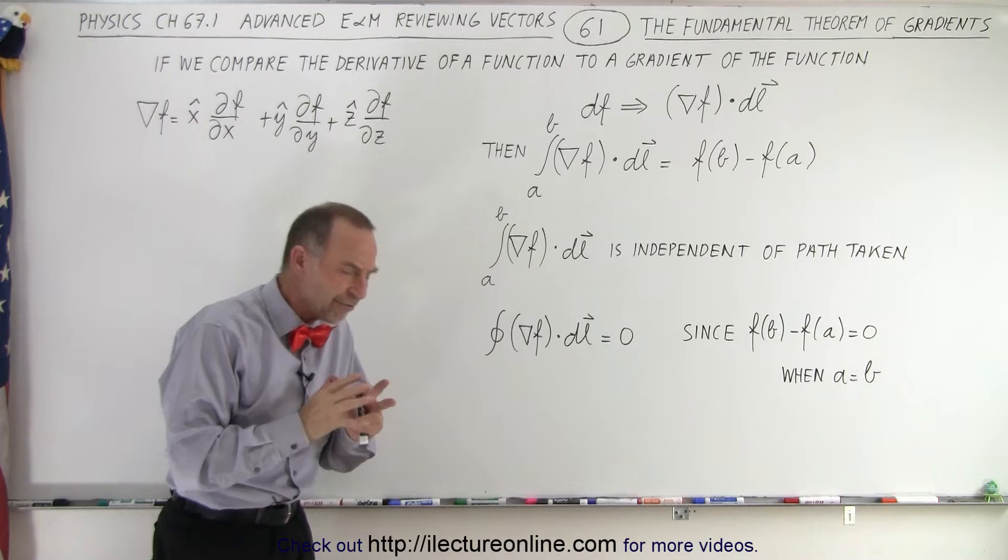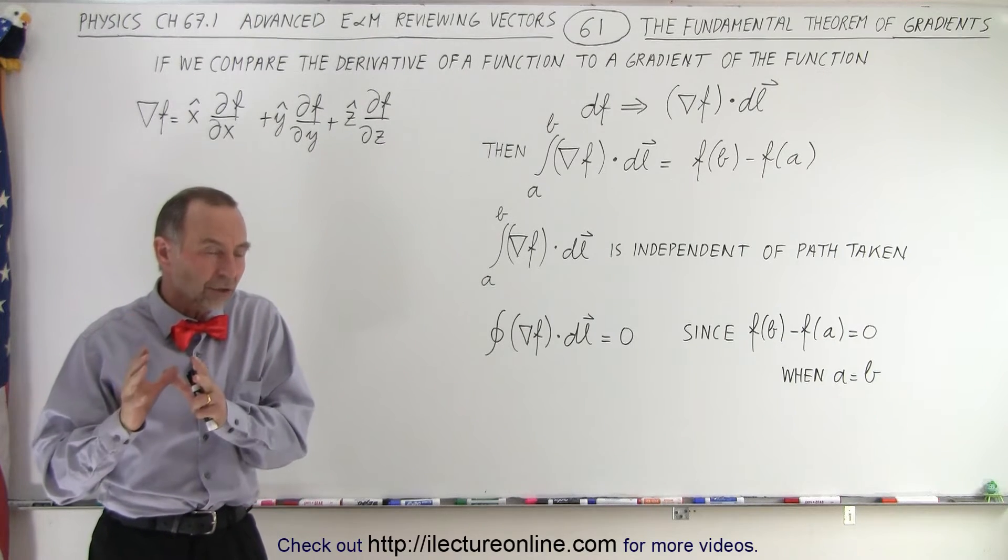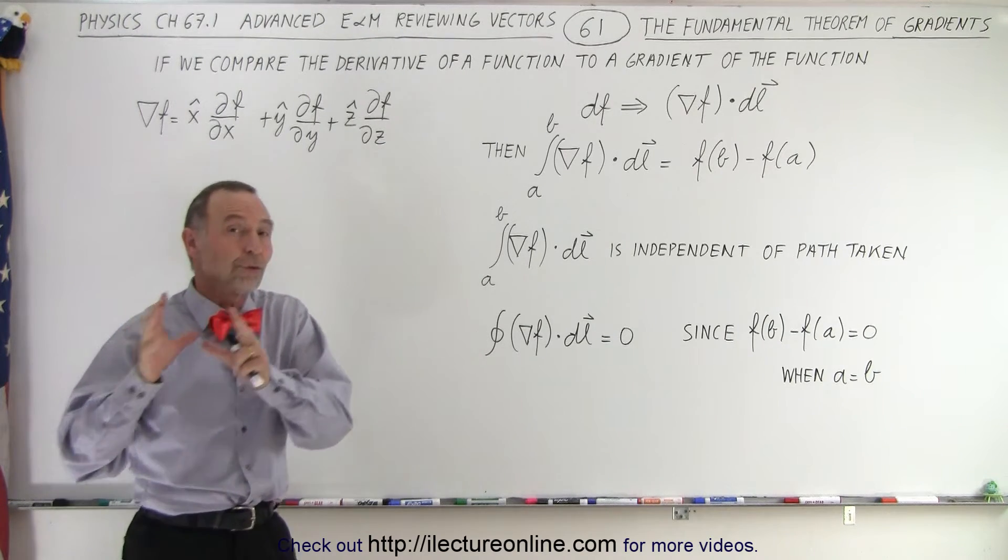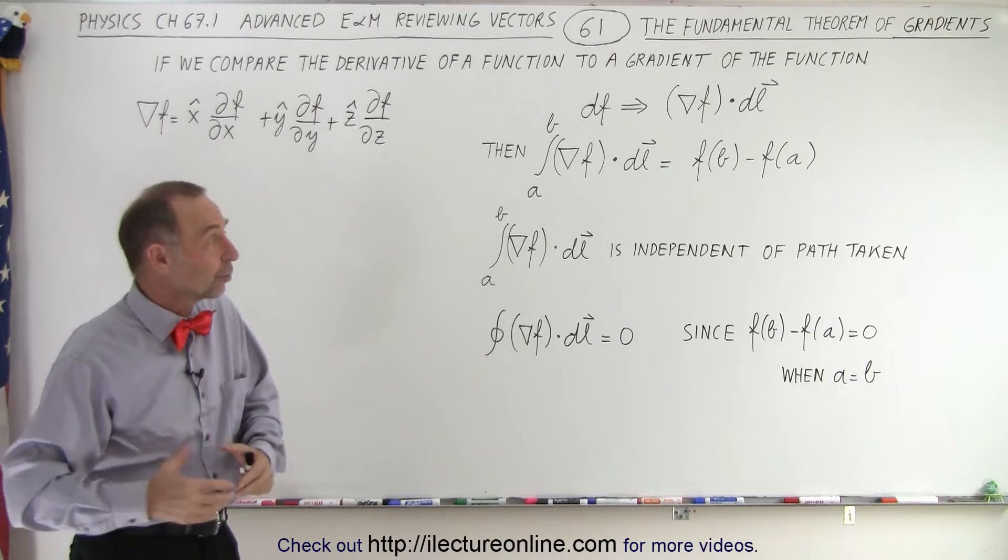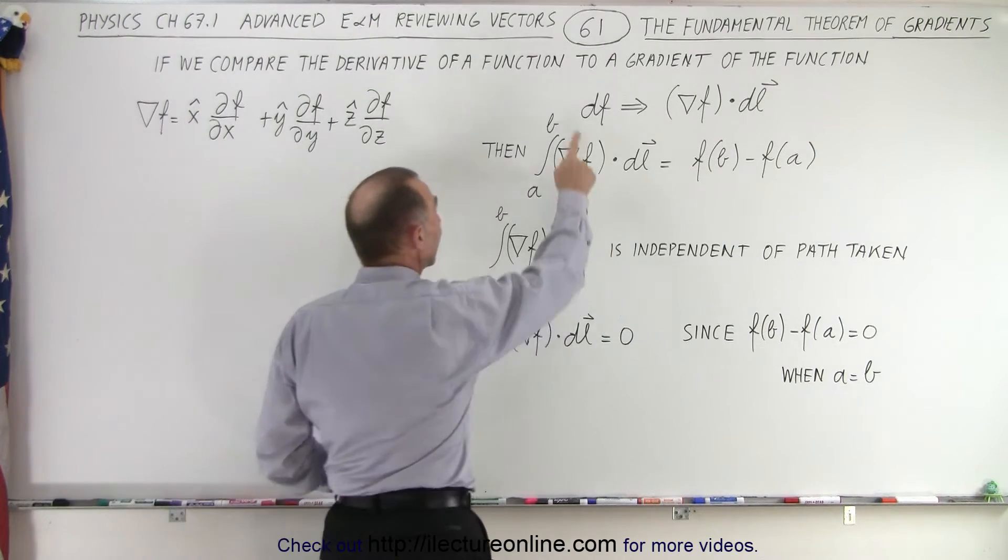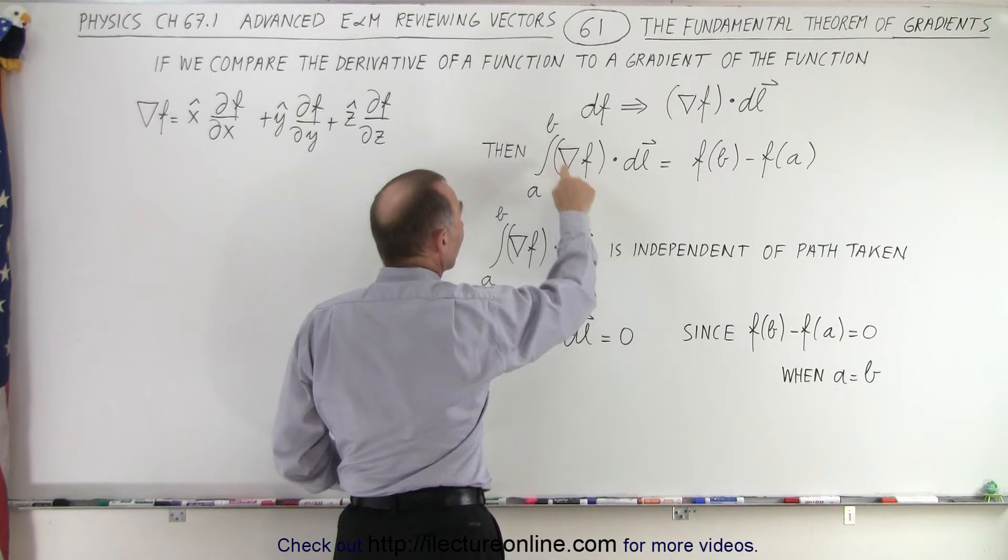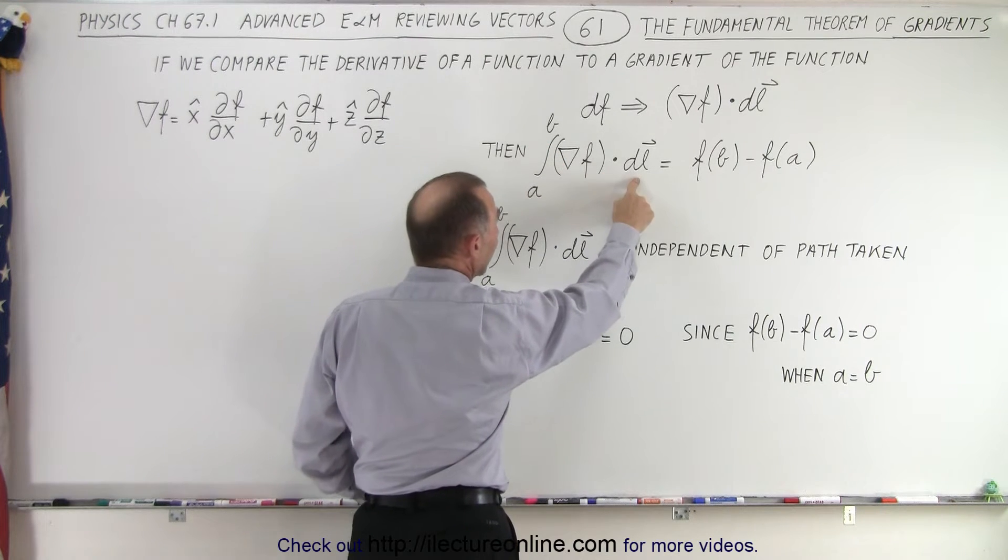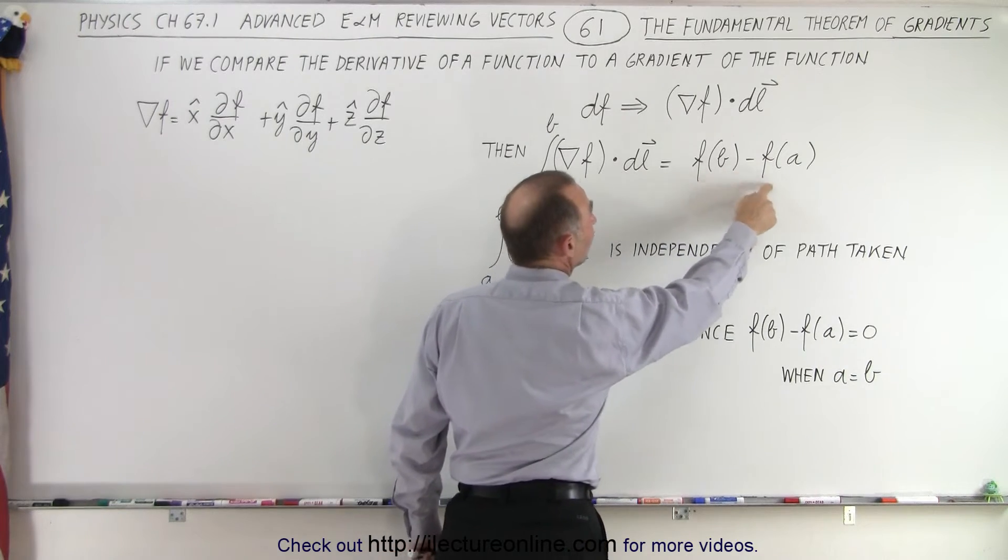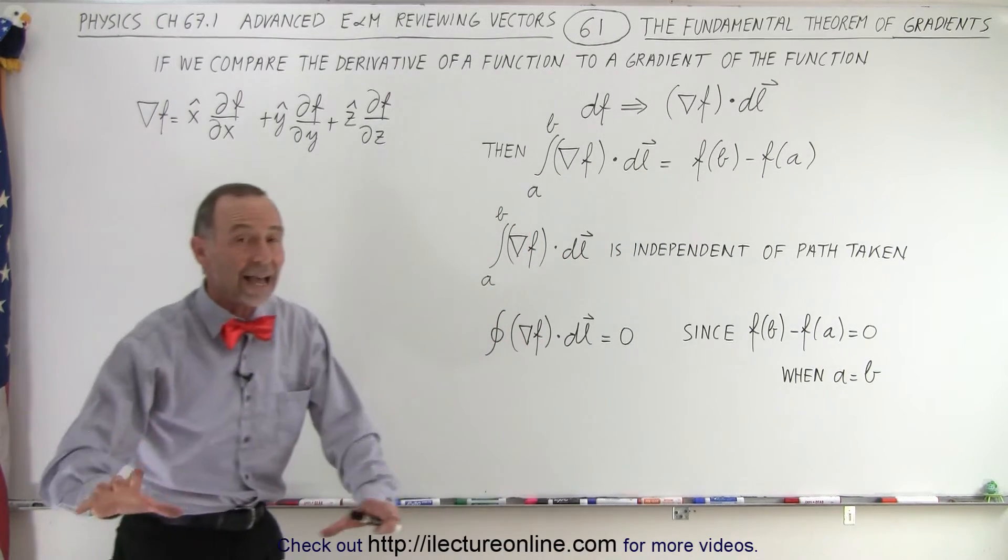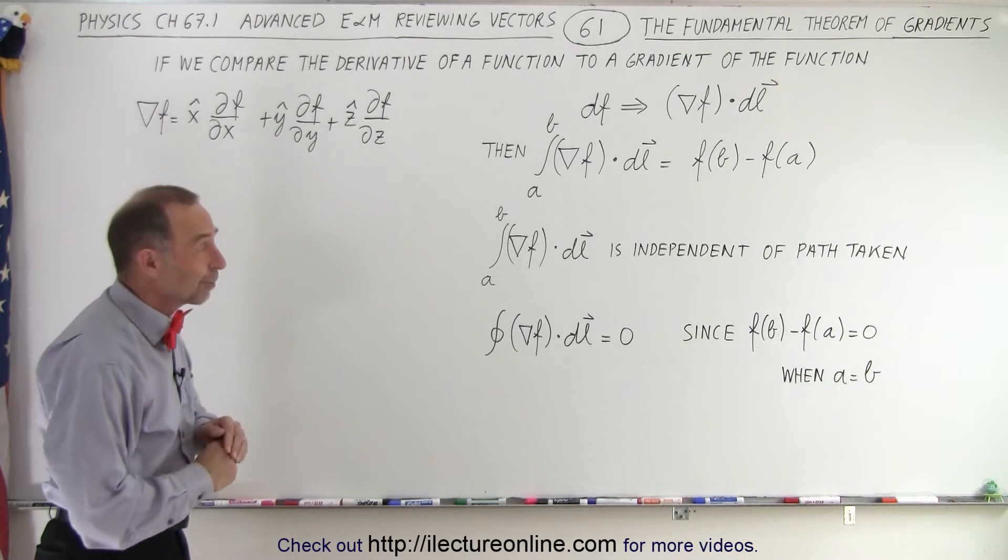And so when we use the fundamental theorem of calculus and we apply that to gradients, we essentially also have the fundamental theorem of gradients, which then says that if you take the integral from A to B of the gradient of a function dot DL that is equal to the function evaluated at B minus the function evaluated at A. It looks exactly the same as the fundamental theorem of calculus.